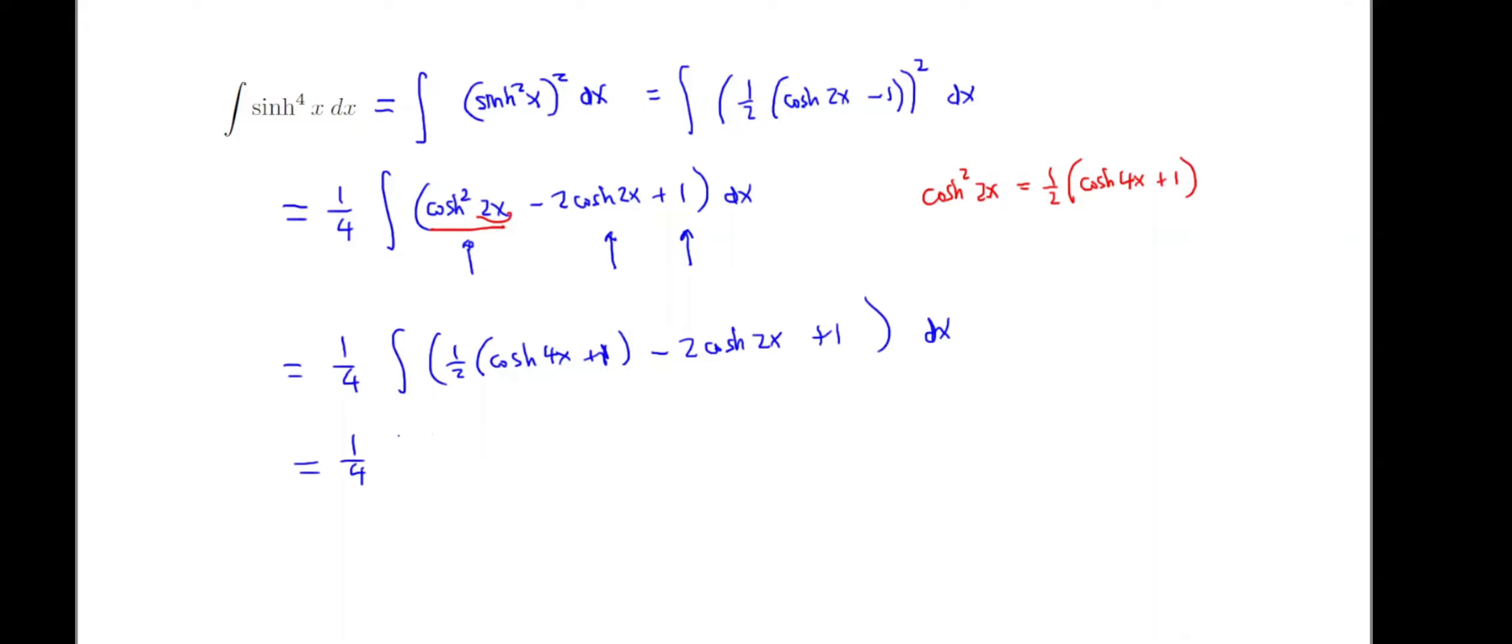Cosh squared of 2x is going to equal one-half cosh 4x plus 1. So I'm going to get one-fourth integral, and then one-half parentheses cosh 4x plus 1, close parentheses, and then the rest stays. Maybe a little bit of simplifying we can do here. One-fourth integral. I'm going to have a one-half cosh 4x. When I distribute this one-half in, I'm going to get a one-half there, and then plus that one at the end. That's going to become three-halves, and then I'm still going to have the minus 2 cosh 2x in the middle. Now it looks like we can integrate all of these terms.